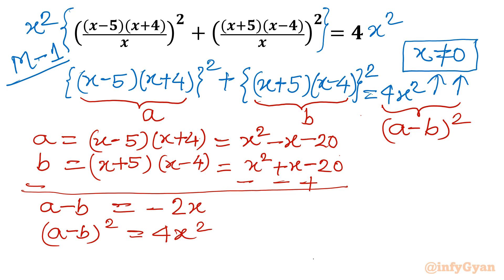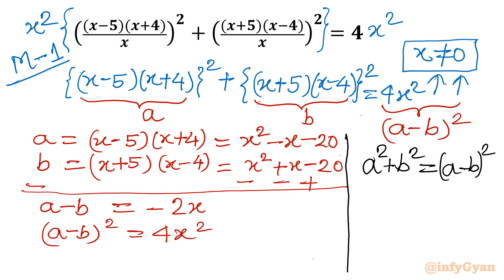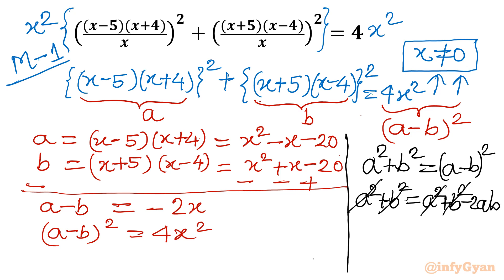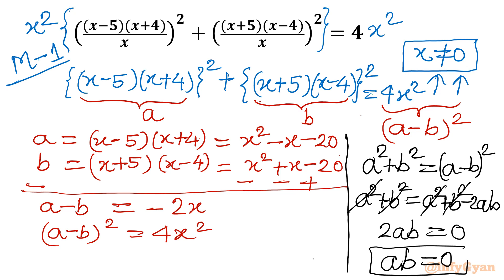The left-hand side is a squared plus b squared, and the right-hand side is (a minus b) whole squared. So we write a squared plus b squared equals (a minus b) whole squared. Applying the algebraic formula, (a minus b)² equals a² plus b² minus 2ab. Cancelling a² plus b² from both sides, we conclude 2ab equals 0, or ab equals 0.